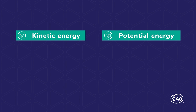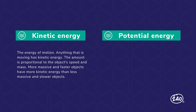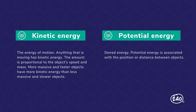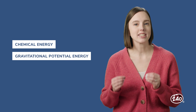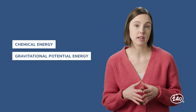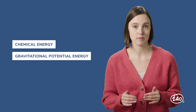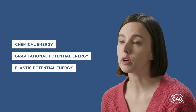There are two broad classifications of energy: kinetic and potential. Kinetic energy is the energy of motion — anything that's moving has kinetic energy. The amount is proportional to the object's speed and mass; more massive and faster objects have more kinetic energy than less massive and slower objects. Potential energy is stored energy, associated with the position or distance between objects. Energy can be stored in multiple ways: chemical energy is stored in chemical bonds, gravitational potential energy is the energy an object has because of its height, and elastic potential energy is the energy stored due to elasticity.